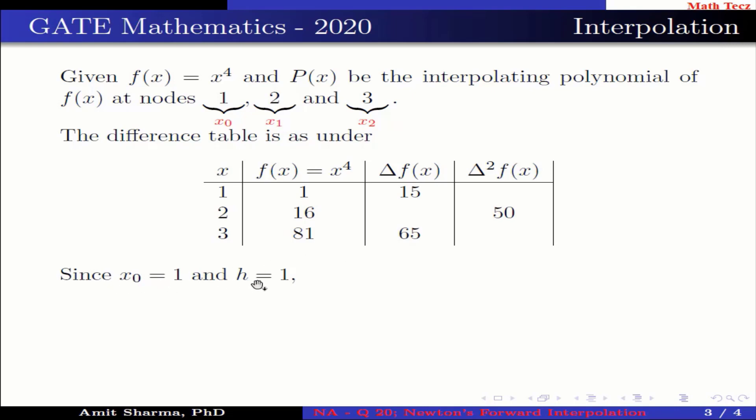Since x0 = 1 and h = 1, therefore p = (x - x0)/h = (x - 1)/1 = x - 1.